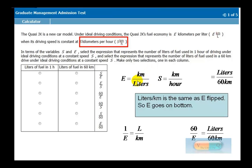The only difference is, well, you only got it for 1 kilometer. If you want it for 60, you just got to multiply by 60. So that's why you end up with this 60 over E as your final answer.